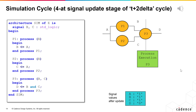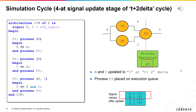At t plus 2 delta, signals B and C are updated to 1. Both B and C are in the sensitivity list of process P3. Therefore, P3 is placed on the process execution list. No more signals require updating, so simulation moves to the process execution phase of the t plus 2 delta cycle.